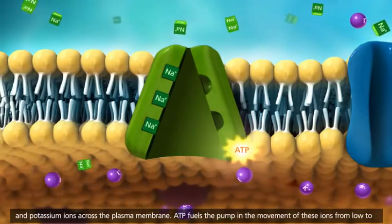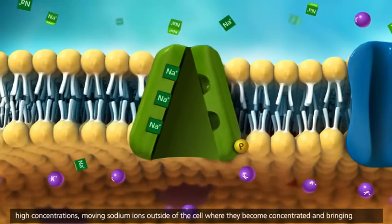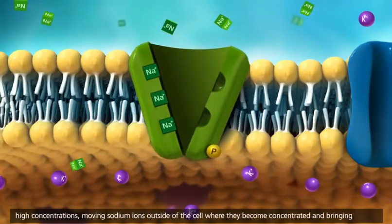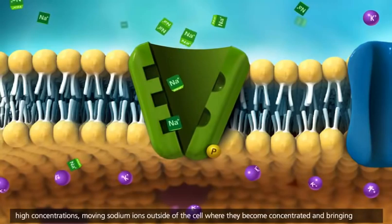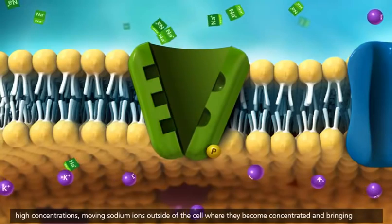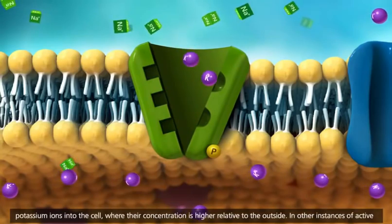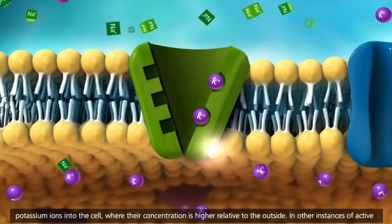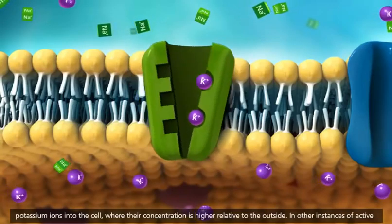ATP fuels the pump in the movement of these ions from low to high concentrations, moving sodium ions outside of the cell where they become concentrated, and bringing potassium ions into the cell where their concentration is higher relative to the outside.